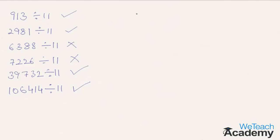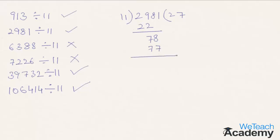Coming to the next number, 2981 divided by 11. 11 times 2 is 22, we get 7 here. Bringing down the next digit 8, it is 78, and 11 times 7 is 77. We get 1 here, and bringing down the next digit 1, we get 11. 11 times 1 is 11, so we get remainder 0. The given number is exactly divisible by 11.